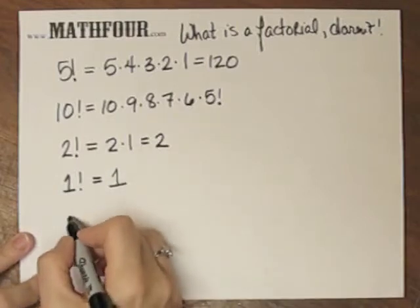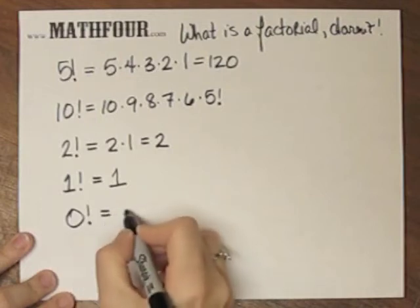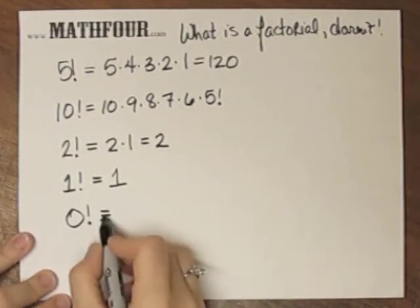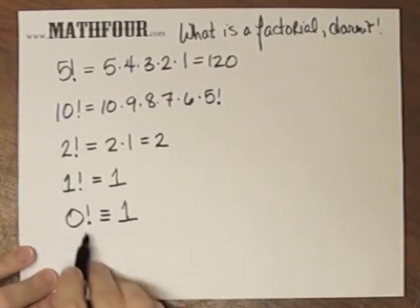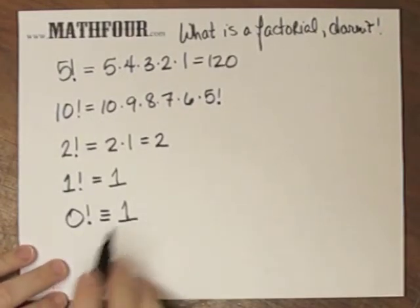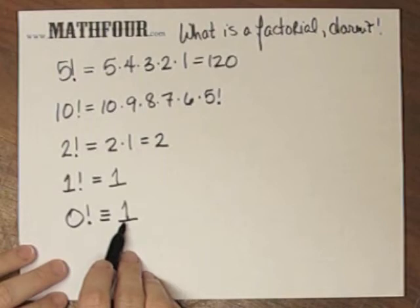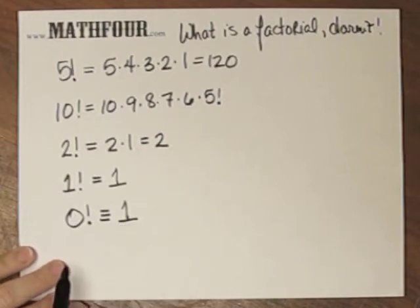The curious one is 0 factorial, and 0 factorial is defined to be 1. The reason why we define it to be 1 is because if we put it equal to anything else, it would really mess things up.